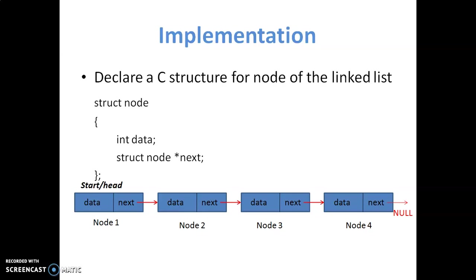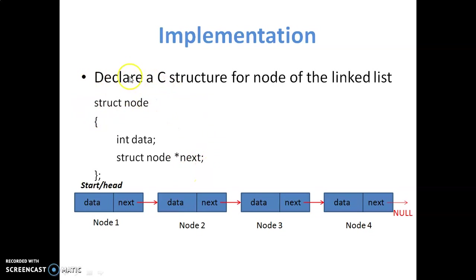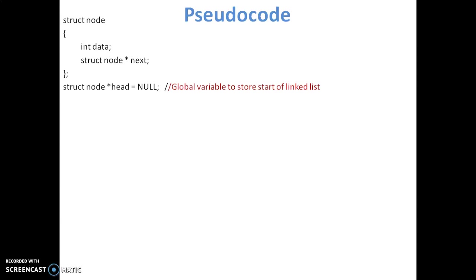First we will declare a C structure for a node in the linked list. The name of that structure is struct node, and it will have two elements: one is data, and the other is a pointer of type struct node, because this pointer is going to point to the next node, which will again be of type struct node. Here you can see the sample list shown with data and next fields, and there are four nodes in this particular singly linked list.